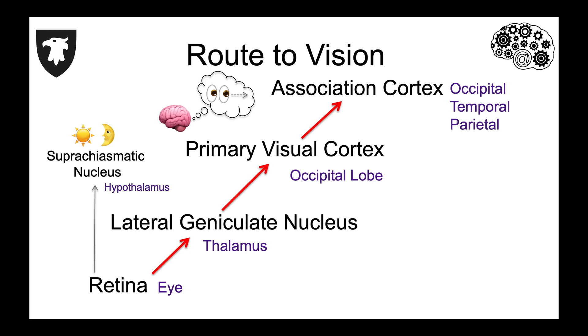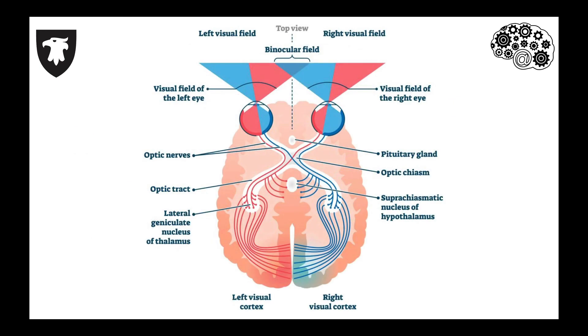Let's look at how visual space is represented in the visual pathway. The left and right eyes capture images from both the left and right sides of visual space, as shown in this figure.